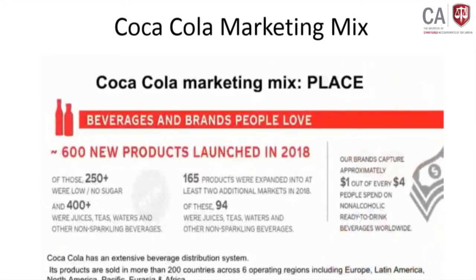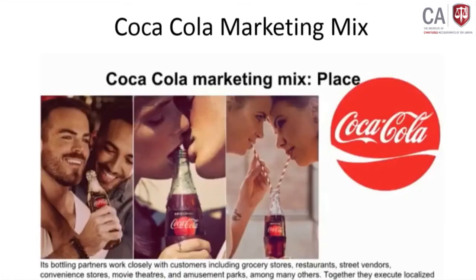Coca-Cola has an extensive beverage distribution system. Its products are sold in more than 200 countries across six operating regions: Europe, Latin America, North America, Pacific, Eurasia, and Africa. Coca-Cola sells an average of 1.9 billion servings each day. The company manufactures and sells concentrates, beverage bases, and syrups to its bottling partners, who manufacture, package, merchandise, and distribute the final branded beverages to customers including grocery stores, restaurants, street vendors, convenience stores, movie theaters, and amusement parks.